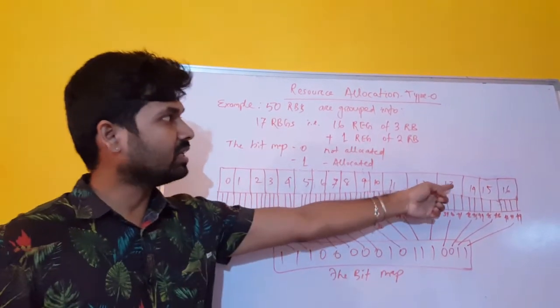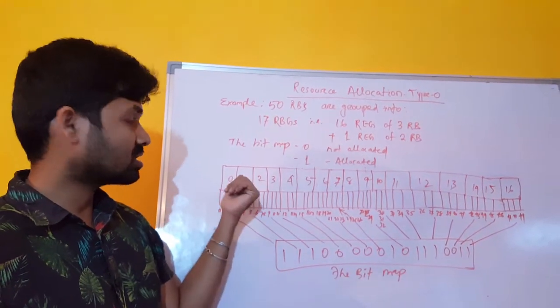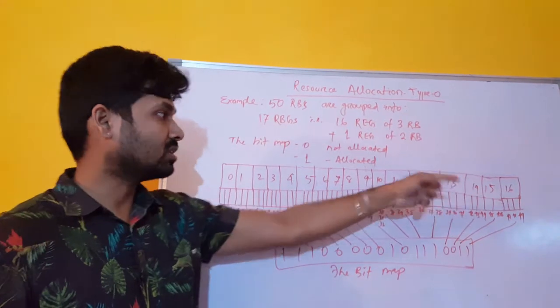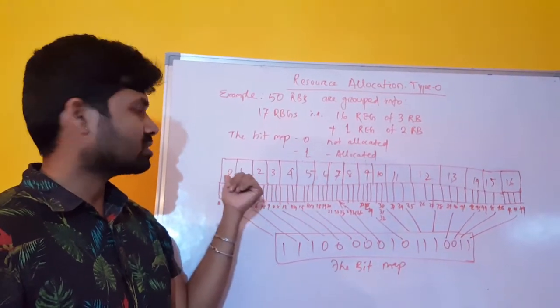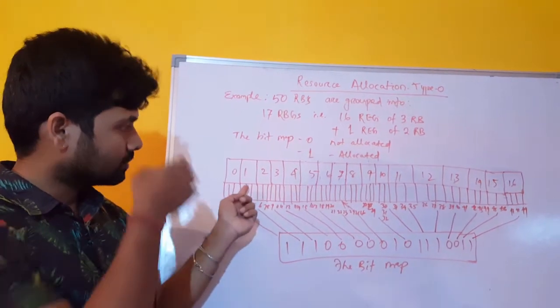These are the 17 resource element groups. As I told, it starts from 0. So 16, 1 to 16, 16 plus 0 is 1, 17. So total 17 groups we have divided.